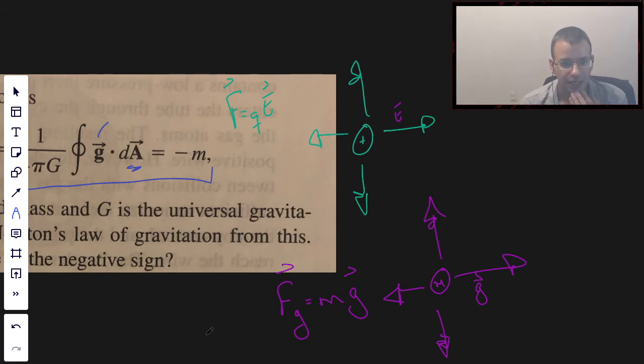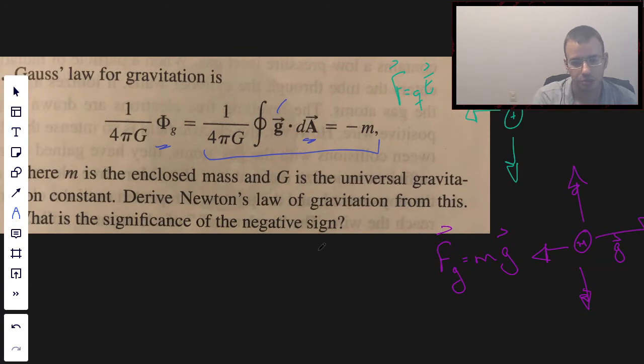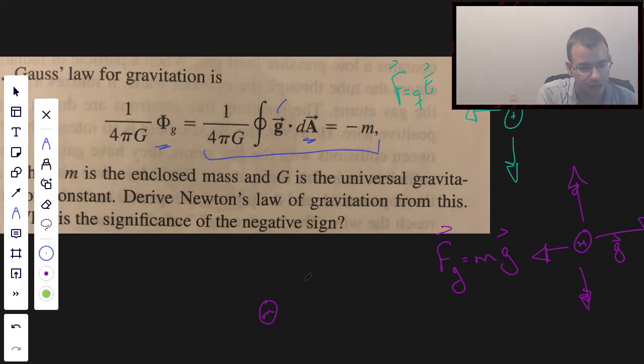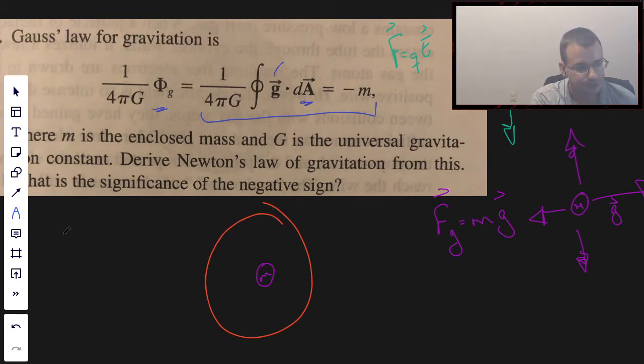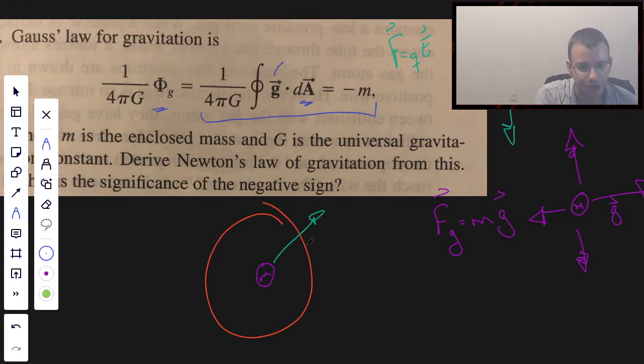So the idea here then is this is the dot product of gravitational field and an area, a Gaussian surface, which is going to be enclosed. The picture here that we would use would be mass and then some sort of sphere. We're going to use a sphere for the Gaussian surface. The gravitational fields coming out of our mass are going to go like that.